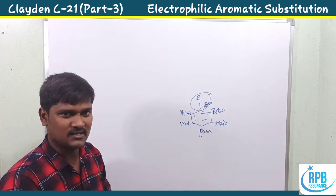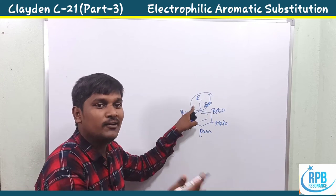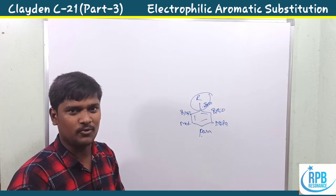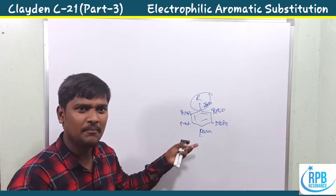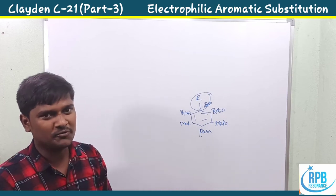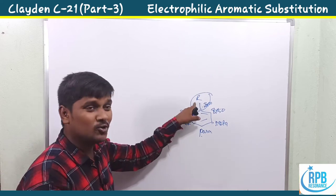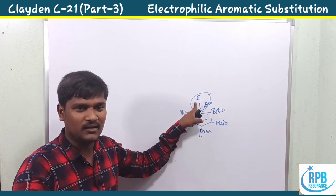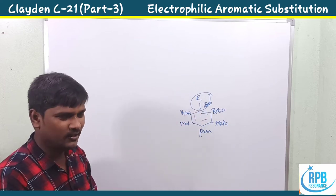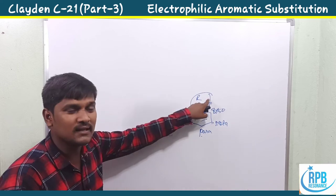Whenever our substituent group is changed, it produces different kinds of electrophilic substituted products — ortho, meta, or para products. Now onwards I'll focus on what happens when our group is OH, NH2, methyl, alkyl groups, or alkoxy groups. Today specifically I'm going to deal with what happens when the group is OH.